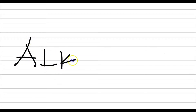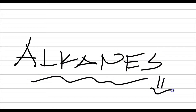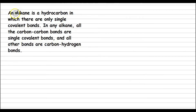The simplest among hydrocarbons are the alkanes. In this video, we'll try to discuss alkanes in detail. An alkane is a hydrocarbon in which there are only single covalent bonds. In any alkane, all the carbon-to-carbon bonds are single covalent bonds, and all the other bonds are carbon-to-hydrogen bonds.